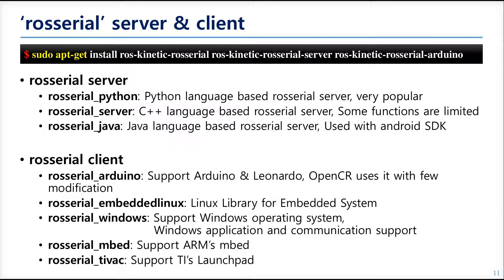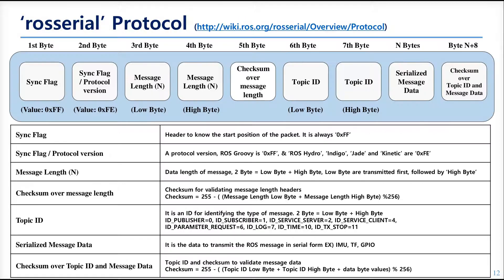To use this, install the following ROS packages. There are three programming languages available for building the server part, and five kinds of ways to program the client part. This chapter will focus on using ROS serial Python for the server and ROS serial Arduino for the client. ROS serial has a serial packet protocol, and its structure is very similar to other common packet protocols.